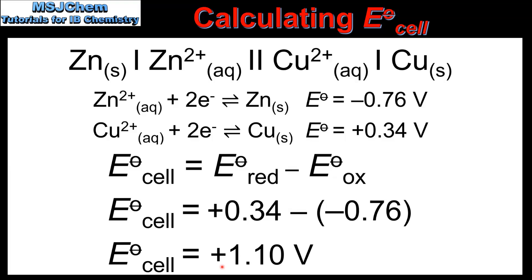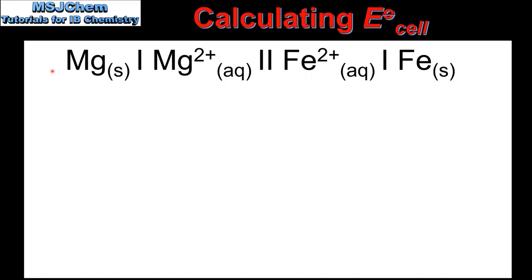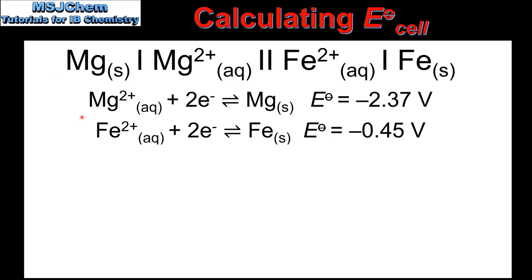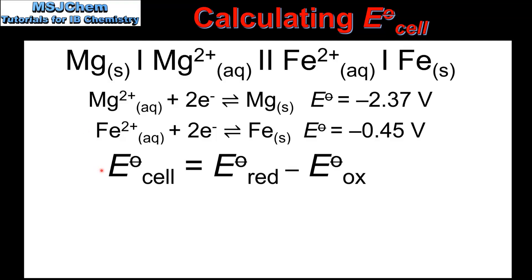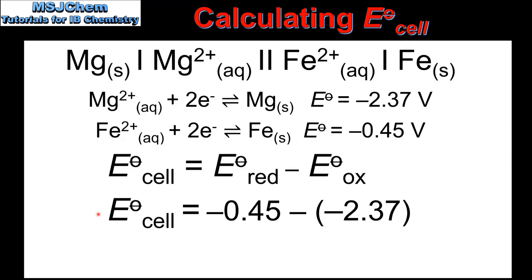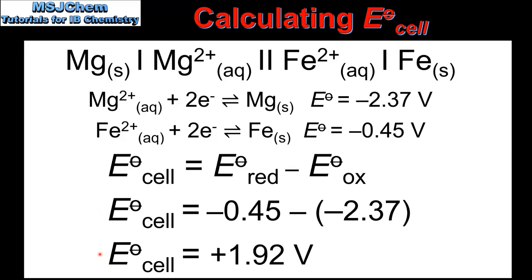The positive sign tells us that this is a spontaneous reaction. In our next example, we'll calculate the cell potential for a voltaic cell made from a magnesium half cell and an iron half cell. Here we have the standard electropotential values for both half cells. The magnesium half cell, with its more negative standard electropotential value, will be the anode, and the iron half cell with its less negative standard electropotential value will be the cathode. Using this equation, the cell potential is negative 0.45 minus negative 2.37, which gives us a cell potential of positive 1.92 volts.